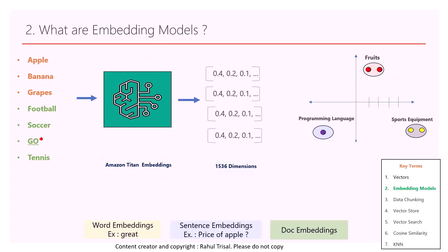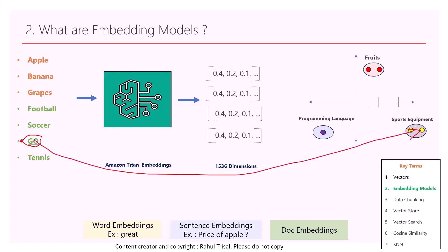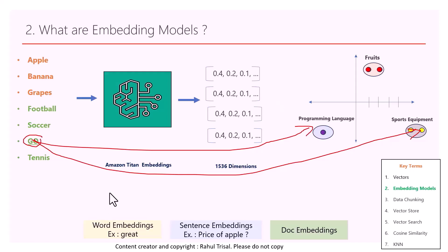Consider the word 'go' — it's a popular board game similar to chess, but it's also a programming language. The critical thing to understand is that the embedding model does not convert a word just based on the keyword, but looks at the meaning and context of that word to cluster it with similar objects. These embedding models can create word embeddings, sentence embeddings, as well as document embeddings.